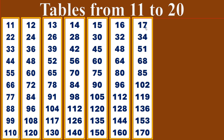Seventeen times table. Seventeen ones are seventeen. Seventeen twos are thirty-four. Seventeen threes are fifty-one. Seventeen fours are sixty-eight. Seventeen fives are eighty-five. Seventeen sixes are one hundred and two. Seventeen sevens are one hundred and nineteen. Seventeen eights are one hundred and thirty-six. Seventeen nines are one hundred and fifty-three. Seventeen tens are one hundred and seventy.